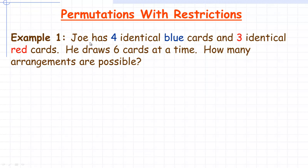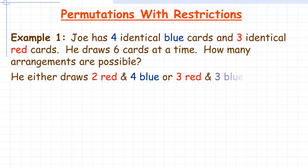In the first example, Joe has four identical blue cards and three identical red cards. He draws six cards at a time, and the question is how many arrangements are possible. There's a restriction here because there are only four blue cards and three identical red ones, and he's drawing six — he can't, for example, draw all six blue or all six red. In fact, he's restricted to either drawing two red and four blue, or three red and three blue. There's no other possibilities, just because of how many different cards he has.